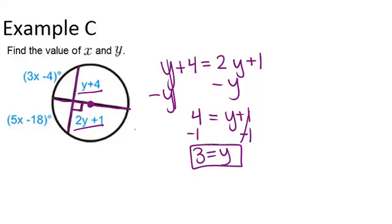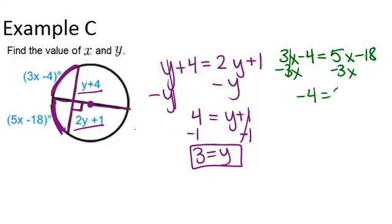So that gives us Y. Now we can do the similar thing to solve for X, because we know that these two arcs also have to have the same measure, because the diameter bisects that arc, the big arc. So that means that 3X minus 4 must equal 5X minus 18. So we can solve this using algebra. We get negative 4 equals 2X minus 18. Add 18 to both sides, and we get 22 equals 2X, which means that X equals 11.